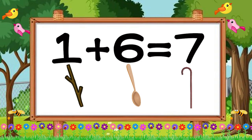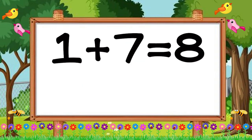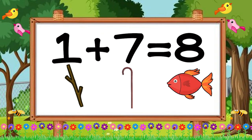That's a very, very nice addition. And we're going to add one like a stick plus seven like a walking stick. One plus seven is equal to eight. Eight like a fish.